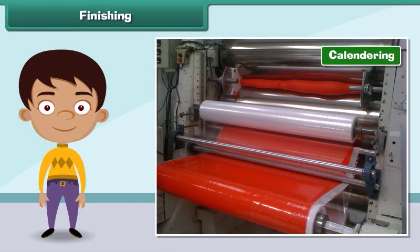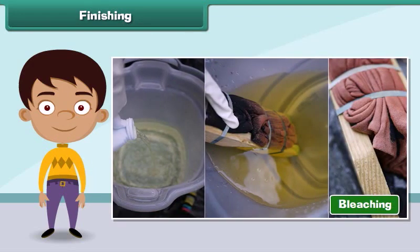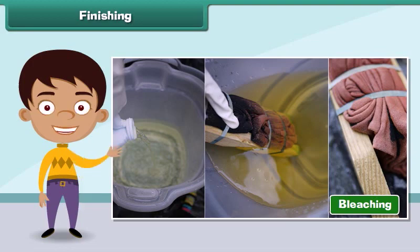Calendaring is the process that improves the smoothness and shine of a fabric. Bleaching is the process of removing the natural color of raw fabric.